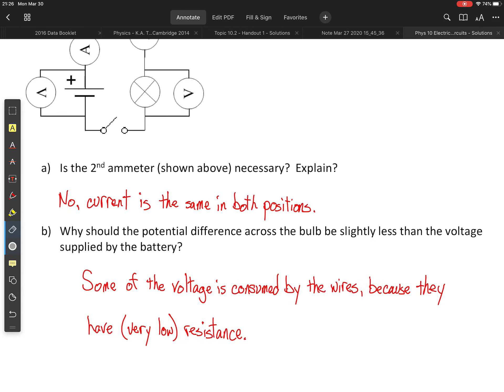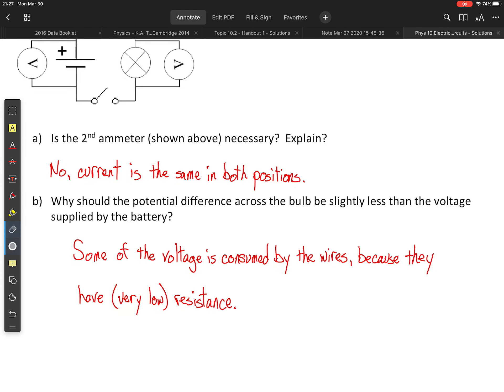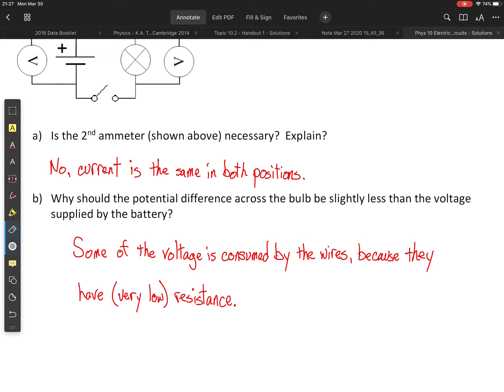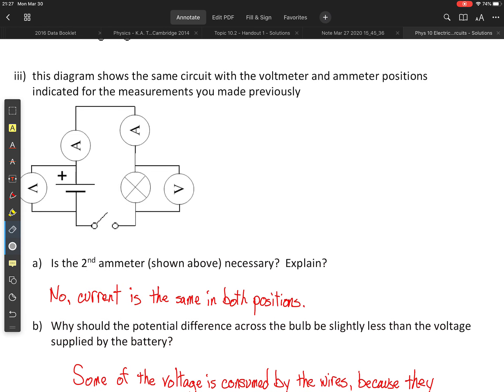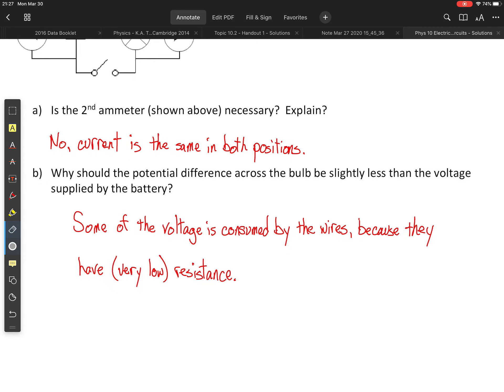Okay, why should the potential difference across the bulb be slightly less than the voltage supplied by the battery? The reason for that may not be obvious, but, especially when we're using simulators, but the answer is that voltage is actually consumed by the wires as well. The wires, even though they are good conductors, still have resistance, even though it's very low. Okay, and because they have resistance, they're going to heat up a little bit, and they're going to consume some of that energy provided by the batteries. Not all of the energy is going to go to the light bulb, although most of it will because, again, our wires have low resistance.